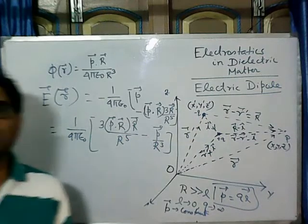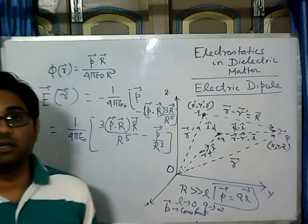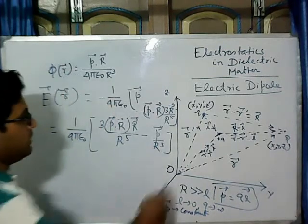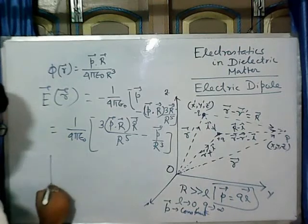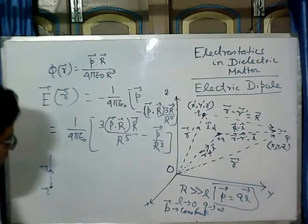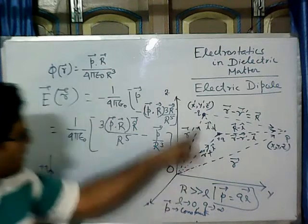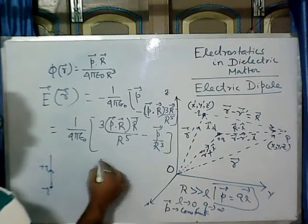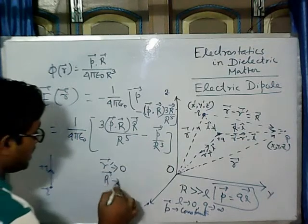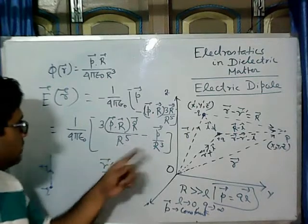For our convenience, if we consider that the minus charge of the electric dipole is situated at the origin, so the minus Q charge is here and the plus Q charge is here, and the direction of the dipole moment is along the Z axis. If we consider minus Q at the origin, then R prime tends to 0, and capital R also tends to R. So in all those forms, we have to put this R, not capital R.